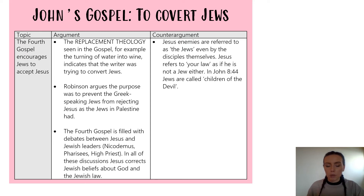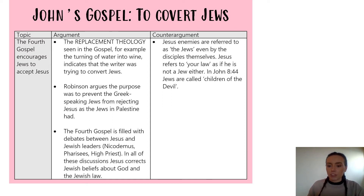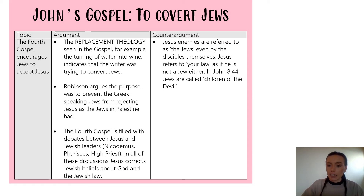A counter-argument, whilst there's only one, is quite a significant one. Jesus' enemies are often referred to as 'the Jews,' even by the disciples themselves. Jesus refers to 'your law' as if he is not a Jew and is trying to distance himself — though that could just be how John is writing it rather than a historically accurate depiction. In John 8:44, the Jews are called the children of the devil. All of these negative references to Jews in John's Gospel do not indicate that this Gospel is trying to convert them — if you try to convert somebody, you generally don't attack them. Whilst it's only one point against three, this counter-argument carries a lot of weight.